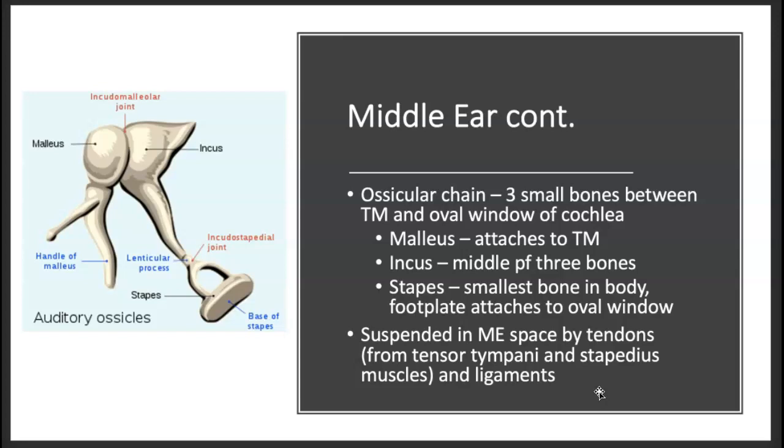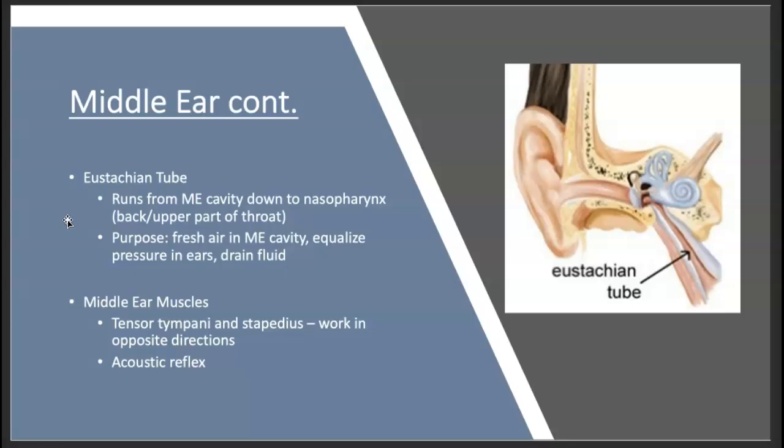Again, we'll do more of this later, but the primary function, the important function of the middle ear space, is to act as an impedance matching transformer. It's held in place by these tendons and joints. The important information right now is that it acts as an impedance matching transformer. It is aerated by the eustachian tube.